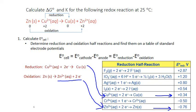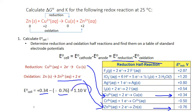We calculate the electrochemical cell potential as the difference between the two: the reduction half reaction potential minus the oxidation. So 0.34 minus negative 0.76 — minus a negative makes a positive — giving us 0.34 plus 0.76, which equals a total standard electrochemical cell potential of 1.10 volts.